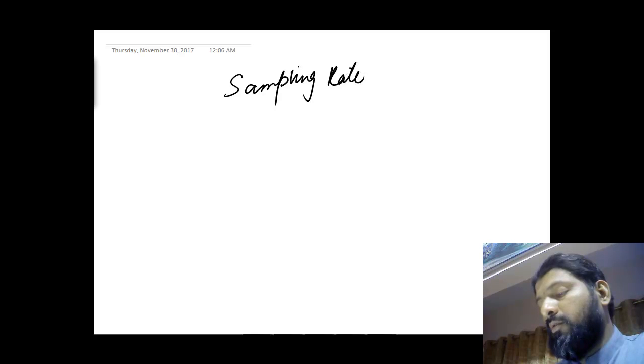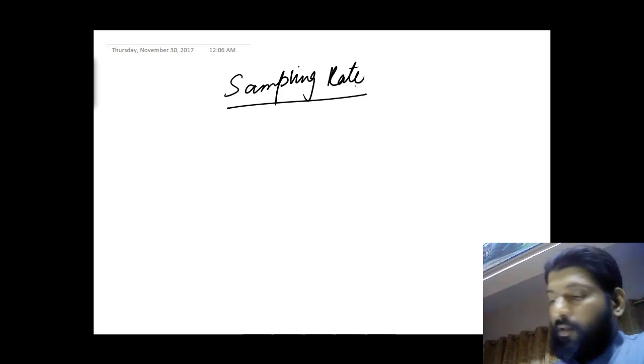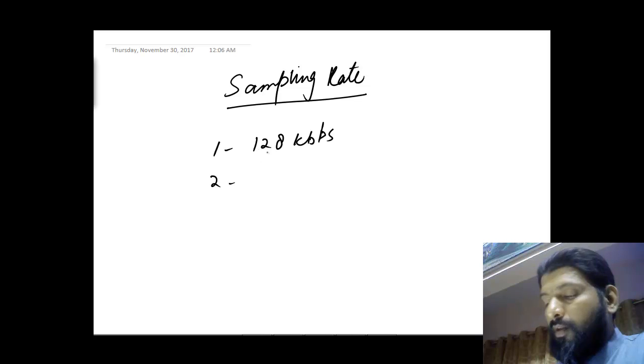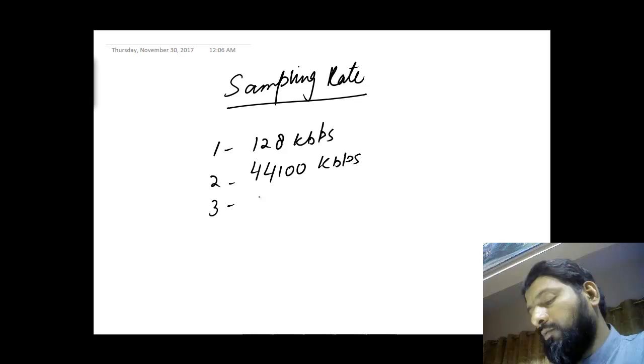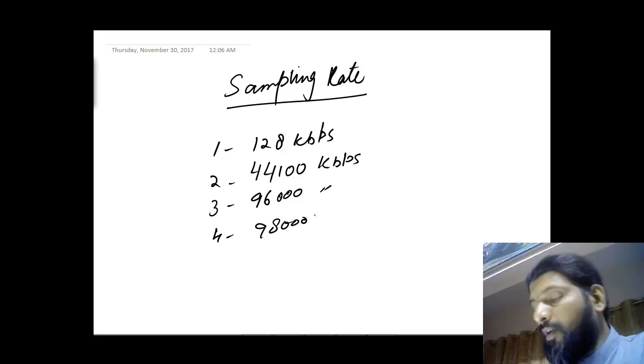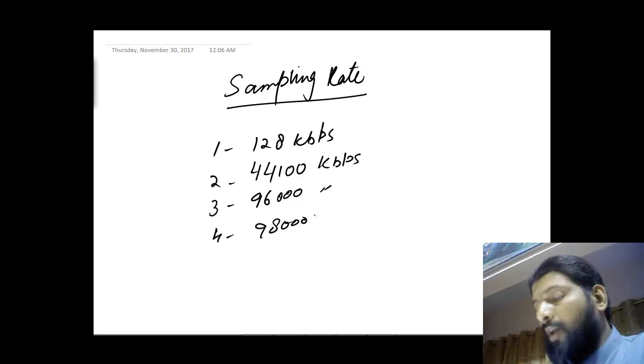Sampling rates or the frequency at which sampling can be used. First one is let's suppose 128 kbps, suppose 44,100 kbps, let's suppose 96,000 and 98,000. You will see the different ranges of sampling rate will be there and you will have to work according to the given ranges. These are the common ranges which I have just written on the paper.